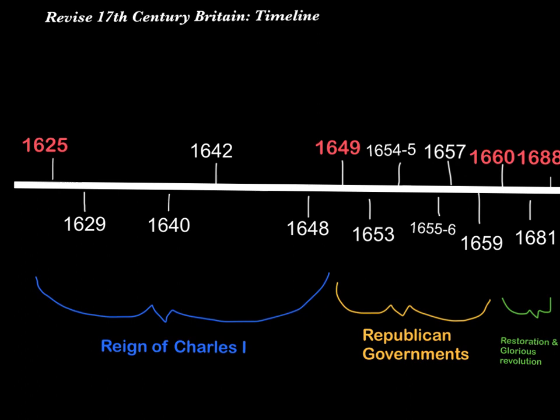The reign of Charles I began in 1625 after his father, James I, died. Notable dates in his reign include 1625 when he was crowned king, 1629 when his personal rule began, 1640 when the Long Parliament was formed, 1642 when civil war began, 1648 his arrest, and 1649 when he was put on trial and beheaded for treason against his country.